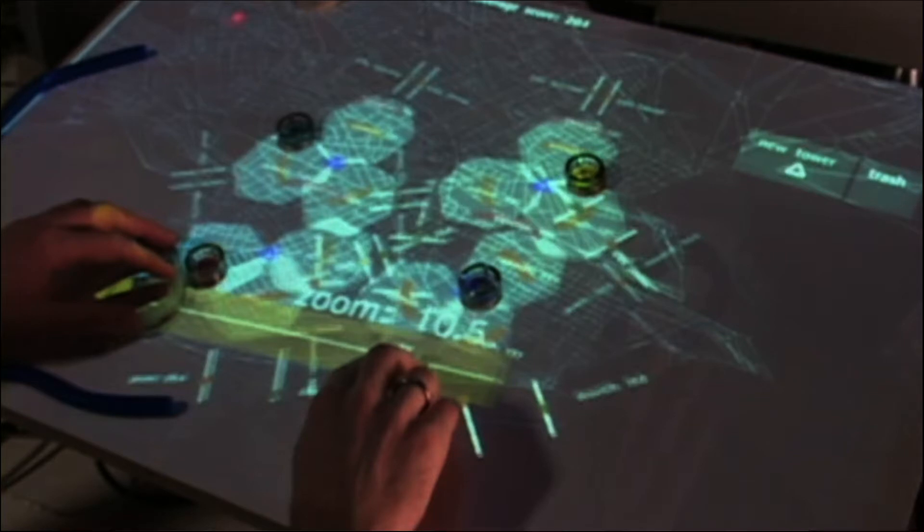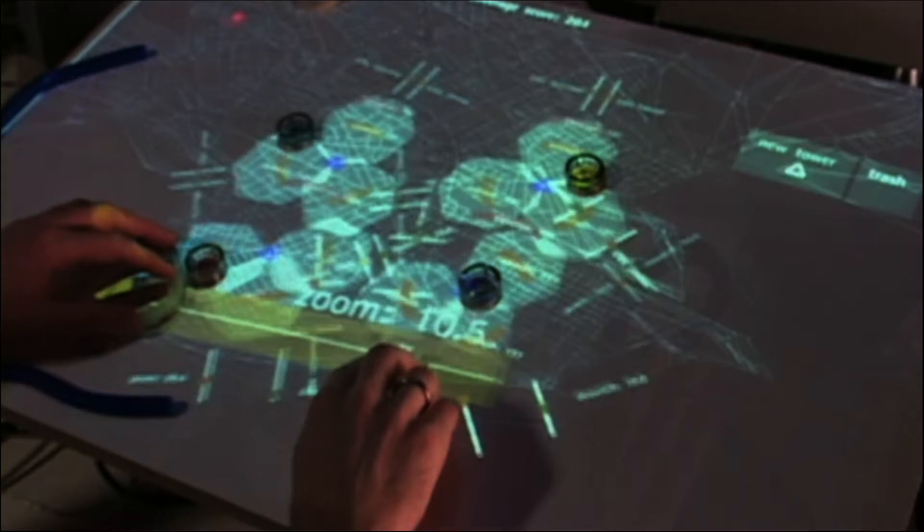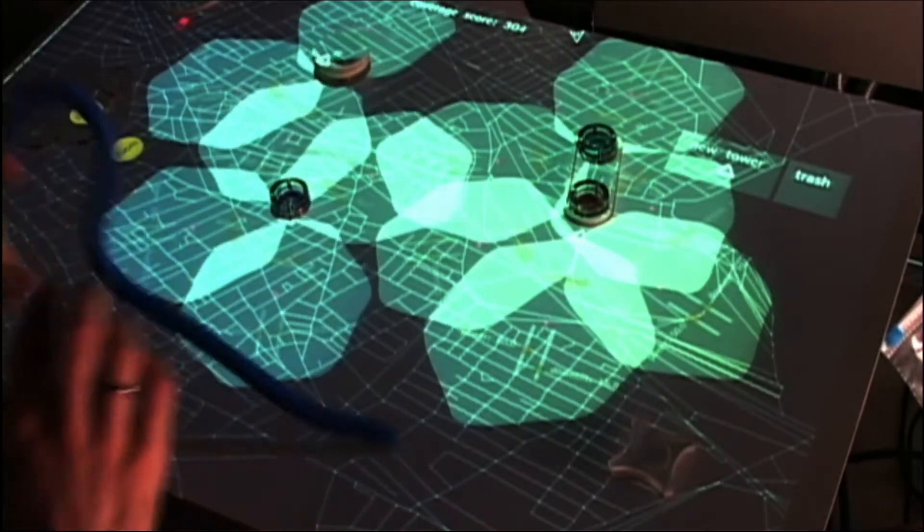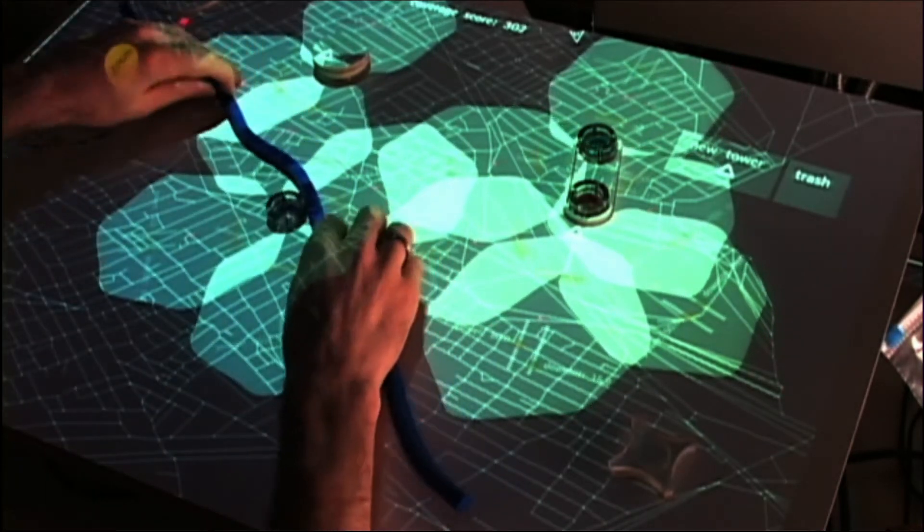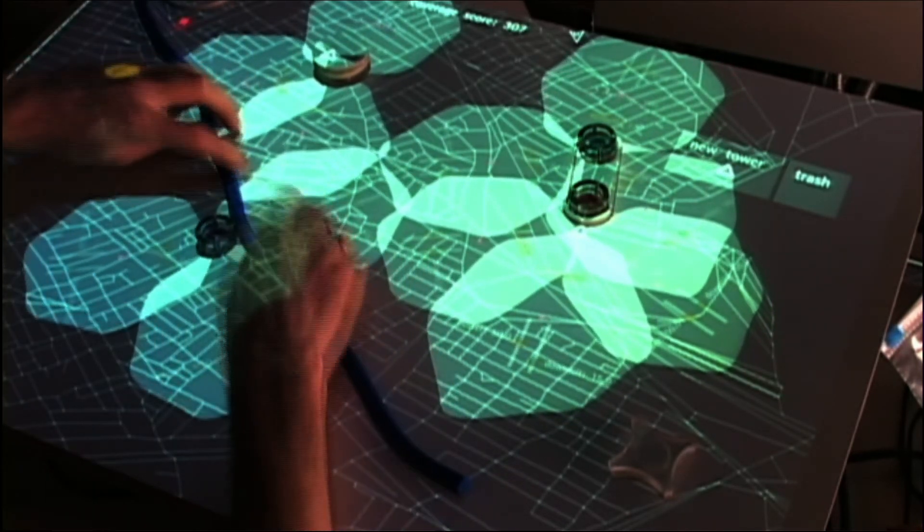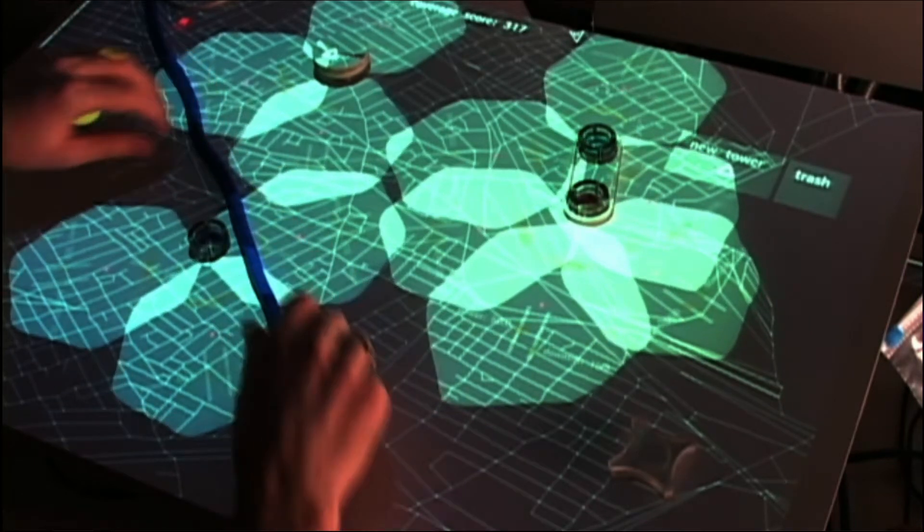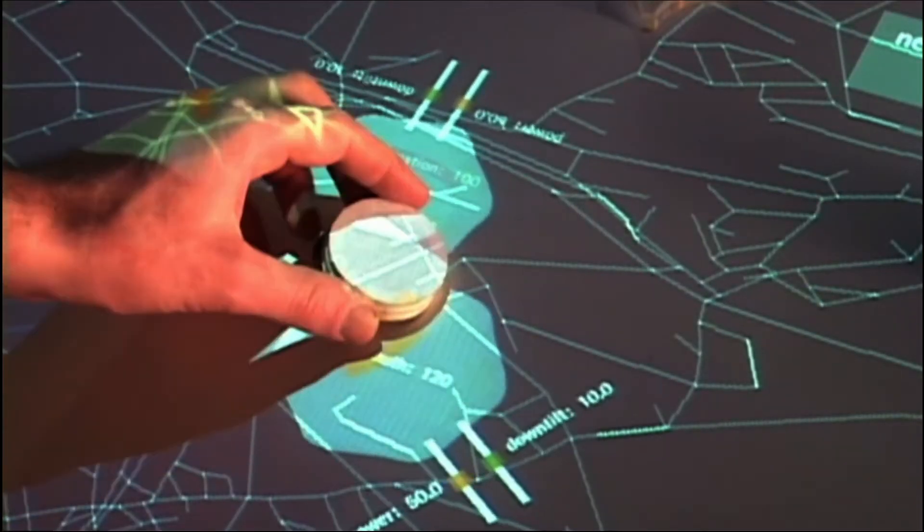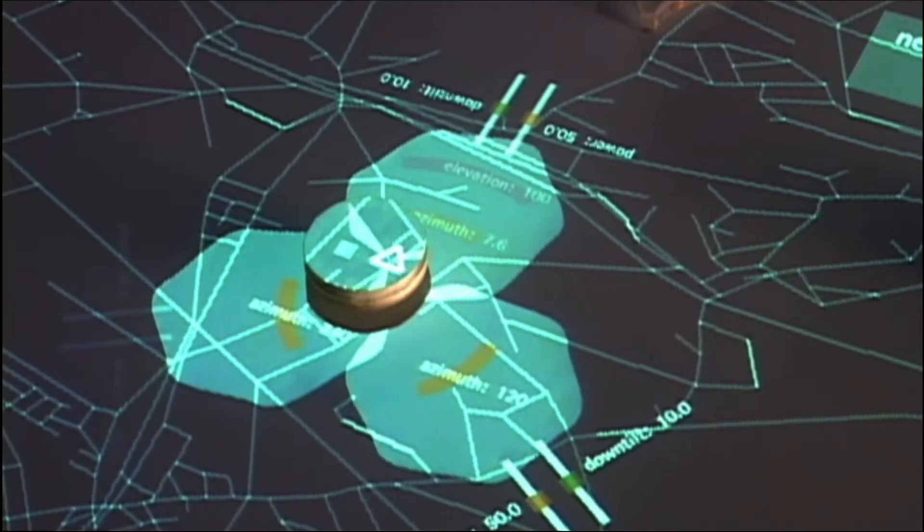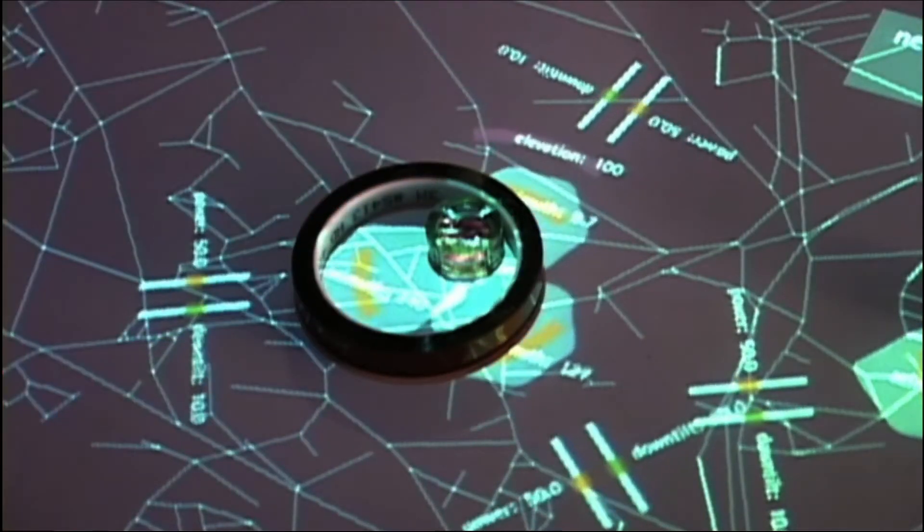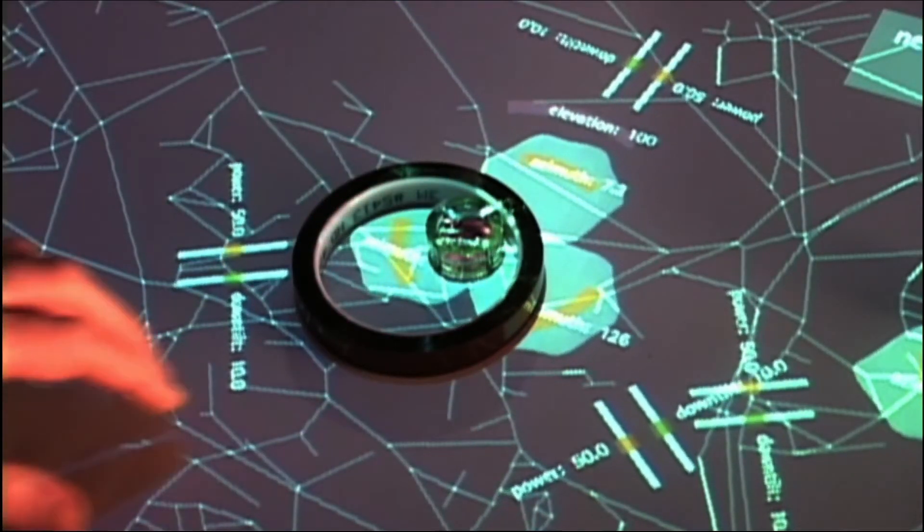And you can just reach in and guide that process. So for example, suppose you wanted a particular tower to be in a particular area of the city. You can just grab a physical object and use it as a barrier to confine that tower to the correct place. Or if you want to lock a tower in a particular area, just put some sort of heavy object on top of it to hold it there.